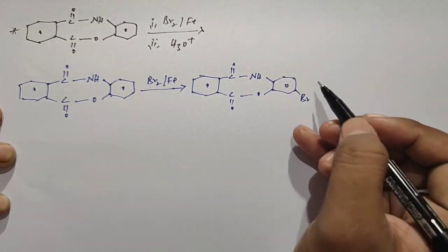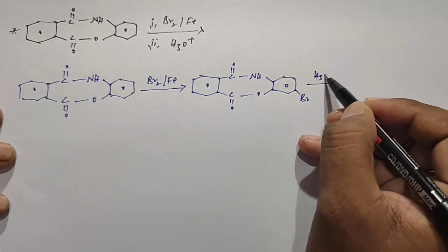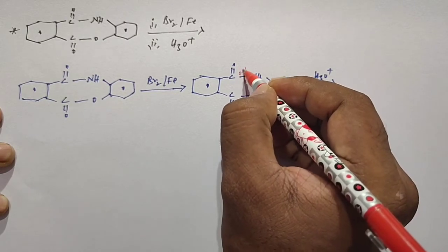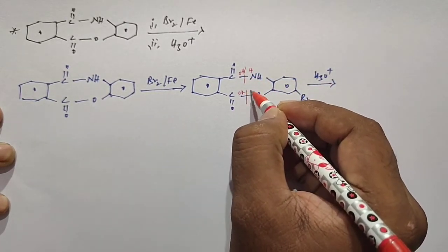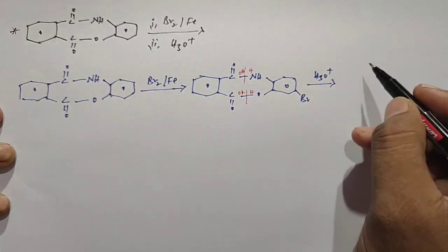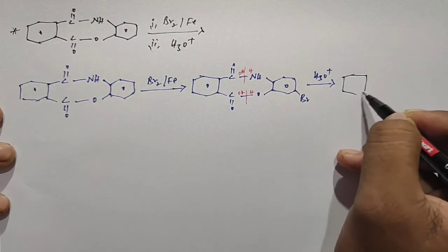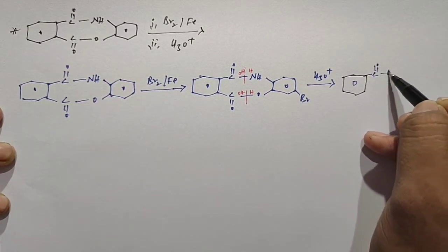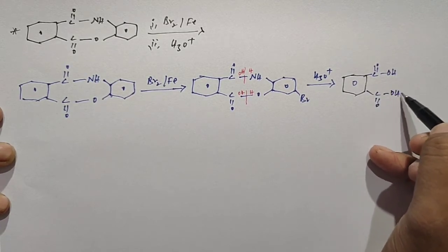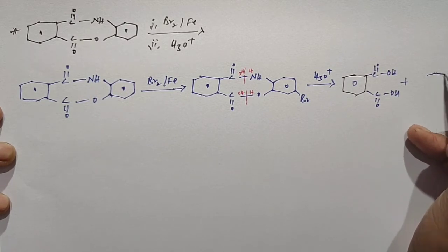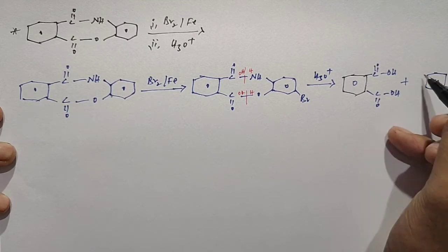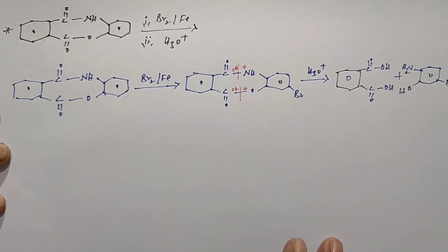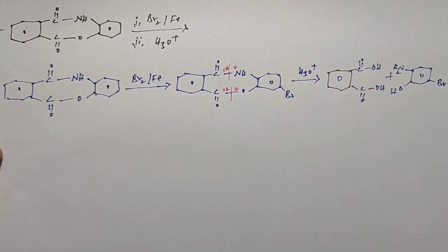After bromination we get this product. Then it undergoes acid hydrolysis, breaking certain bonds: we add an OH group on one side and a hydrogen on the other. After hydrolysis we get two products — one where adding hydrogen gives an amine group, and another where adding hydrogen gives an alcohol group.